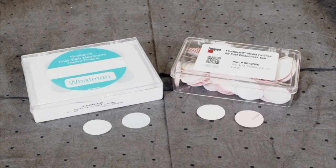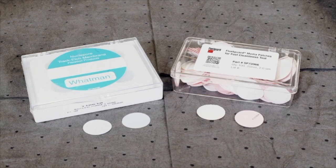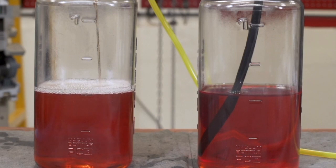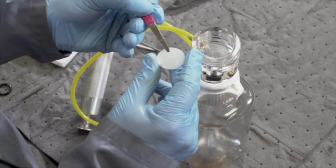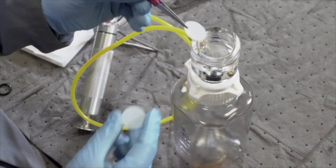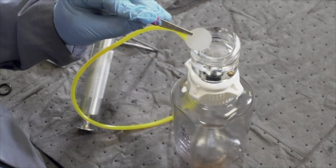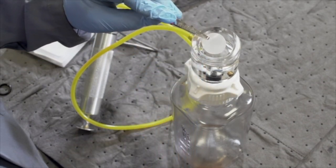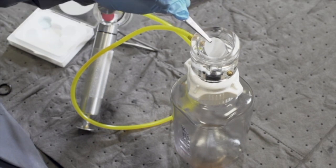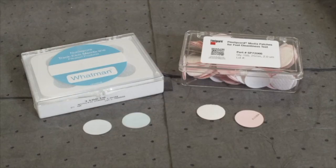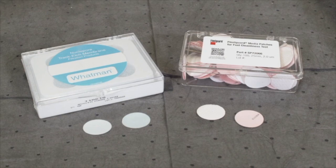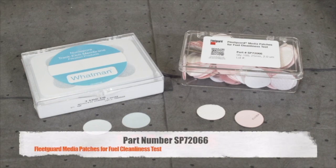Two grades of filter media patches are supplied with the kit: a two micron nanonet media and a one micron pore membrane. Most fuel can be effectively tested using the two micron nanonet media. The one micron membrane is more sensitive and suitable for special cases where there is a need for lab analysis of the contamination found in the fuel. Additional patches are available and can be ordered using part number SP72066.